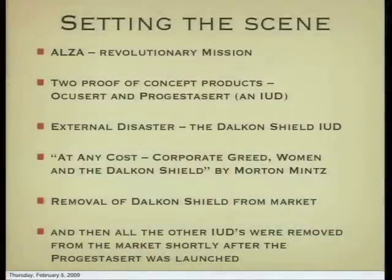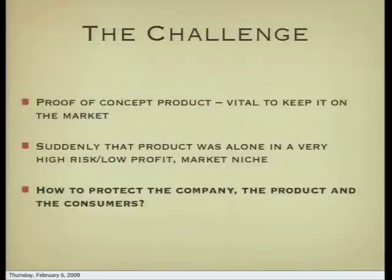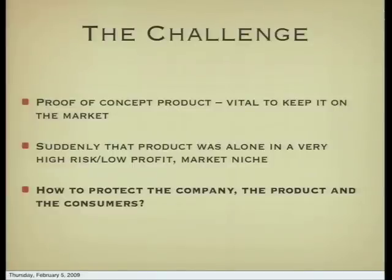The problem was we couldn't afford to take one of our two proof-of-concept products off the marketplace because we had to demonstrate to our investors and the companies we were trying to adopt our technology that controlled drug delivery really worked. So what did we do? Suddenly we were alone in a very high-risk, very low profit margin market niche. No matter what happened with sales, we weren't going to make very much money, and the risk of a single lawsuit would dramatically overwhelm the profit from even tens of thousands of successful products. The question was: how do we protect the company, the product, and the consumers?